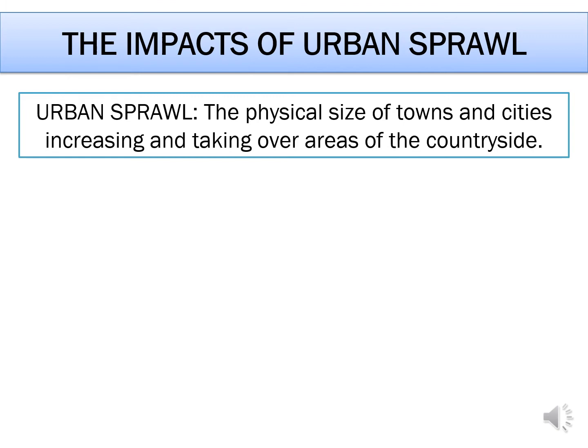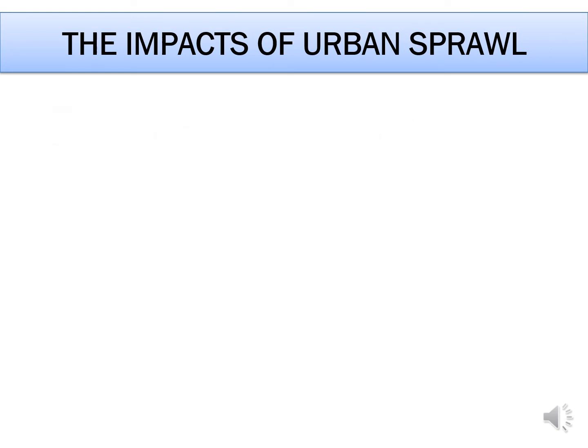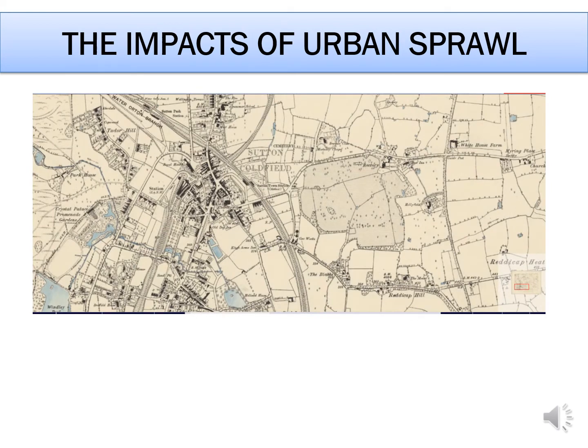To illustrate this process, I'm going to show you a quick example using Sutton Coldfield. Sutton Coldfield is a town to the north of Birmingham city centre. This map on the screen was produced in 1887. You can see the Sutton town centre to the centre west of the map, where you've got the railway tracks and the station, and towards the east largely countryside.